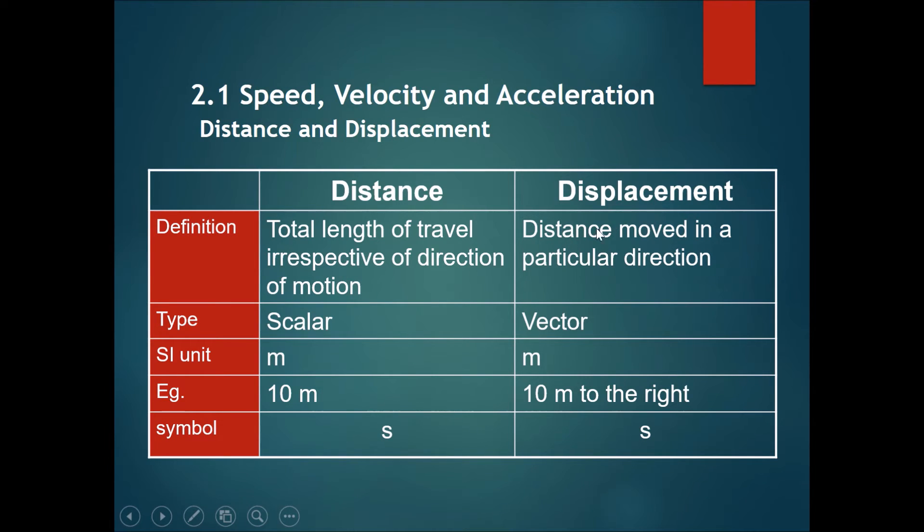displacement is only the distance moved in a particular direction. Distance is scalar, displacement is vector. They both have the SI unit of meters. For distance you say 10 meters, but for displacement you should say 10 meters to the right, because it should include both a magnitude and a direction. The symbol...